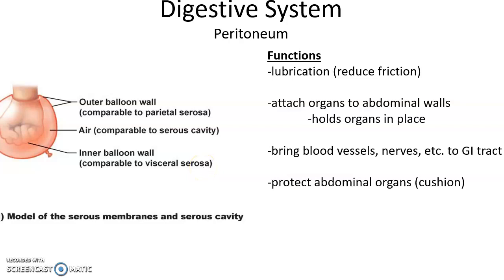The peritoneum also attaches organs to the abdominal walls, helping to hold the organs in place. It is also a structure through which blood vessels, nerves, etc. can run along to get to various structures of the gastrointestinal tract.